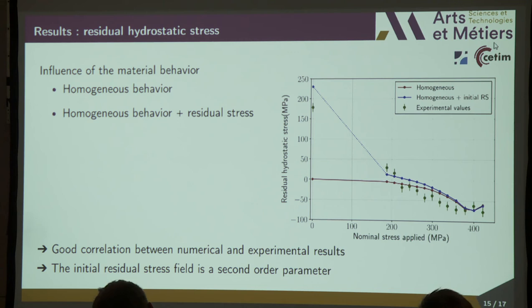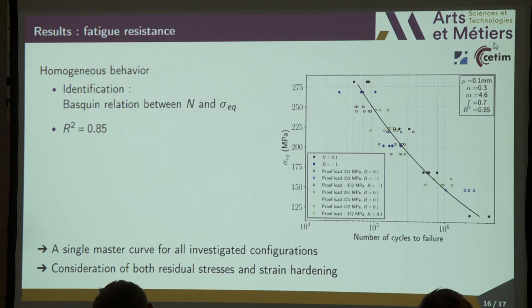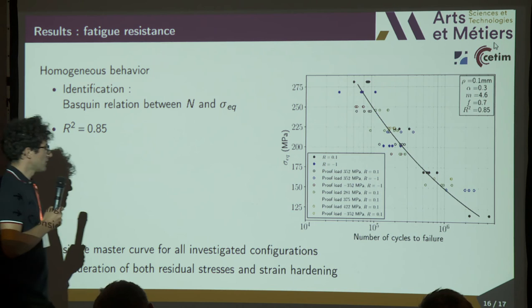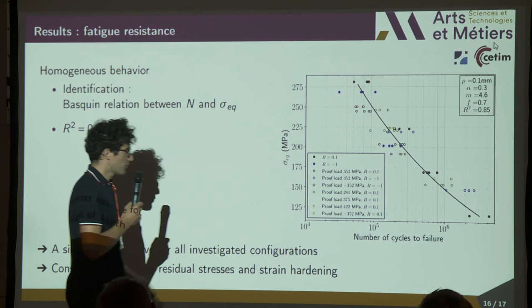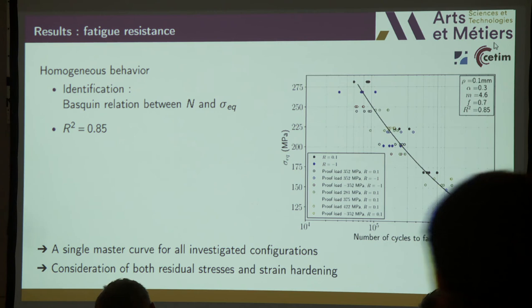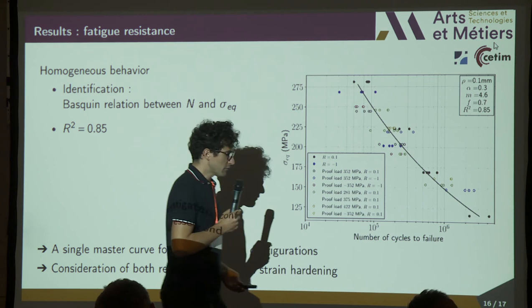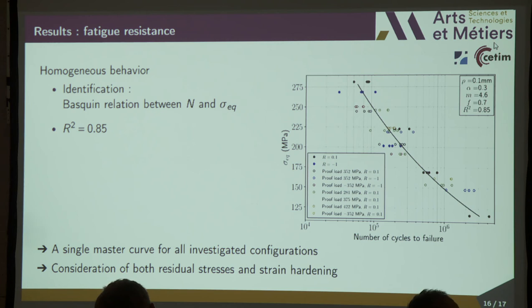About the fatigue prediction: to identify the different parameters of the criterion, we suppose a Basquin relation between the number of cycles and the equivalent stress. This graph gives the equivalent stress according to the number of cycles to failure, with all fatigue results obtained in this study plotted. We can see that all results are gathered around a unique master curve, showing that both residual stresses and strain hardening must be considered to integrate the influence of the proof load and the stress ratio in the fatigue design of this kind of welded structure.